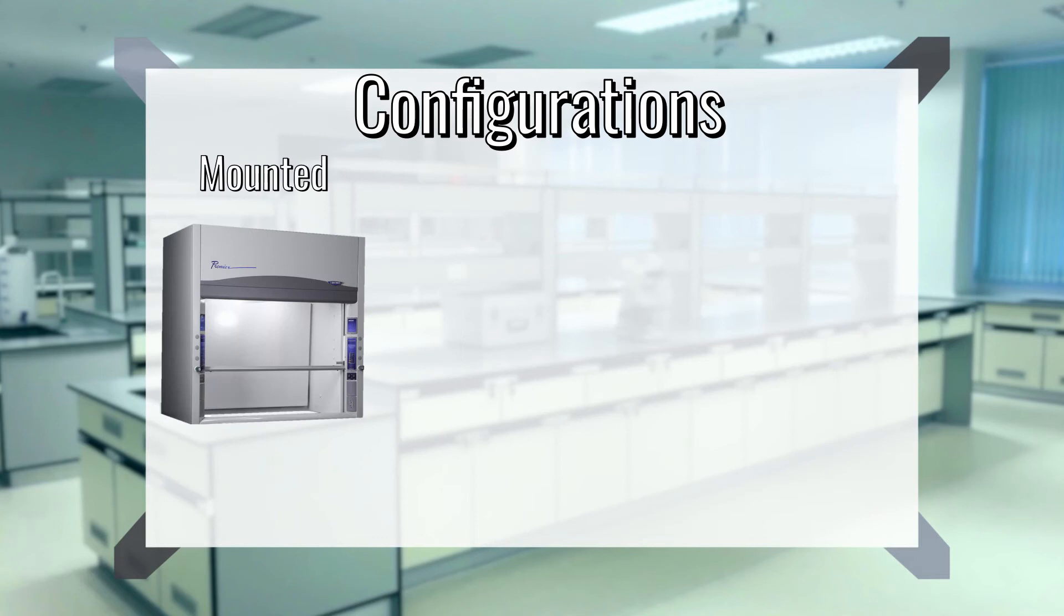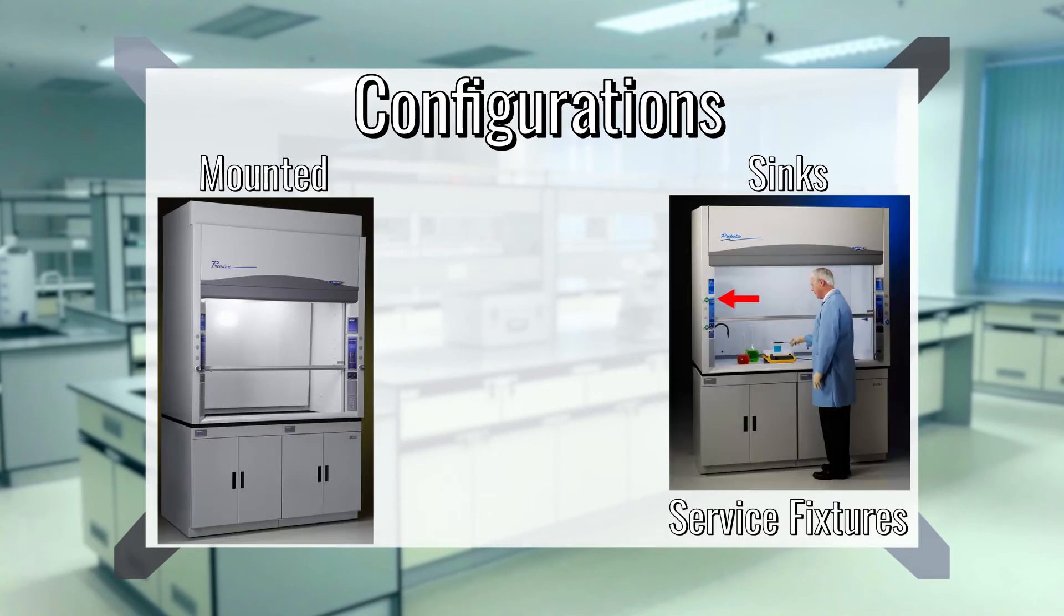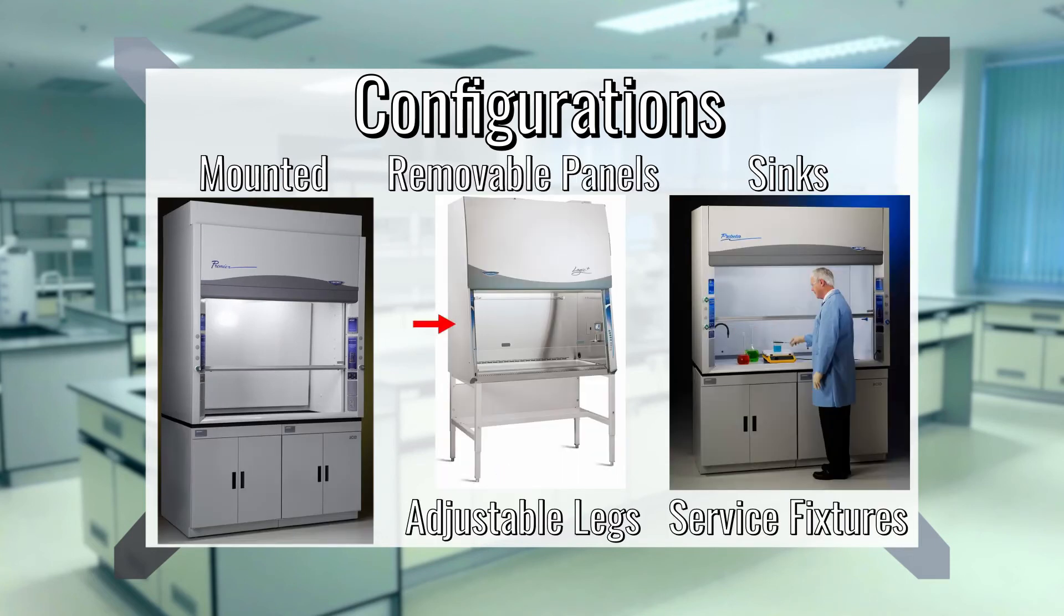Fume hoods can be mounted on base cabinets, may include sinks, various service fixtures, have adjustable legs, and removable panels for wiring and plumbing. Depending on configuration, fume hood assembly is typically done prior to installation on-site to free up time for check-ups.